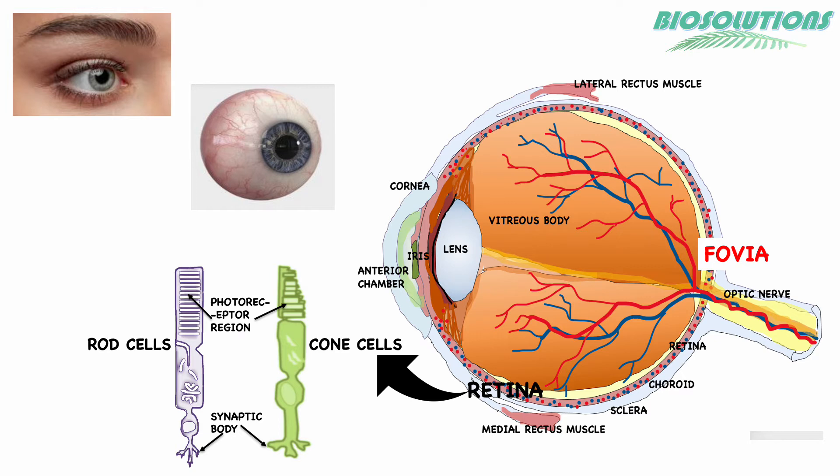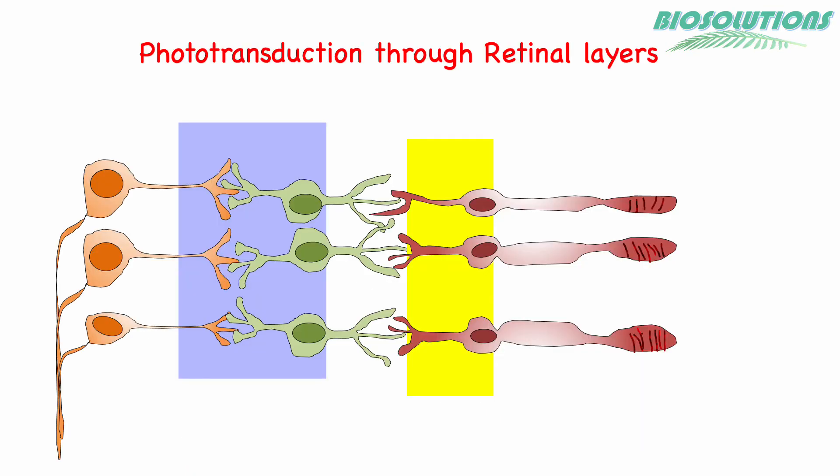The fovea centralis is a small area in the retina that has no rod cells. The cornea and lens focus the light on the fovea, which is responsible for our sharp central vision.